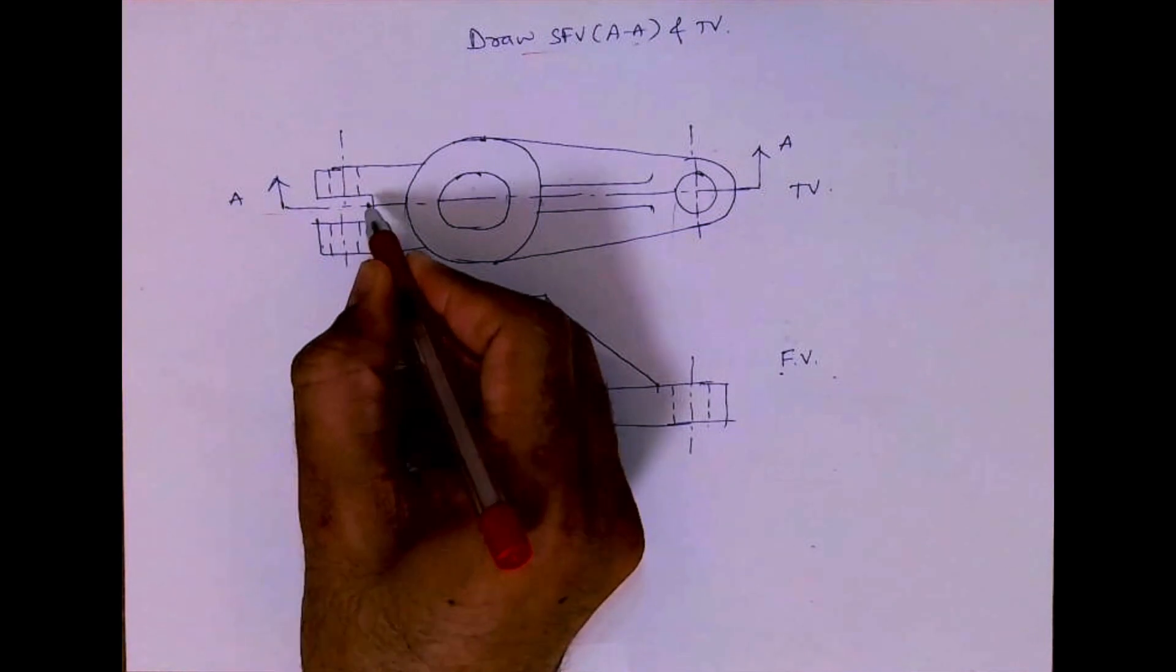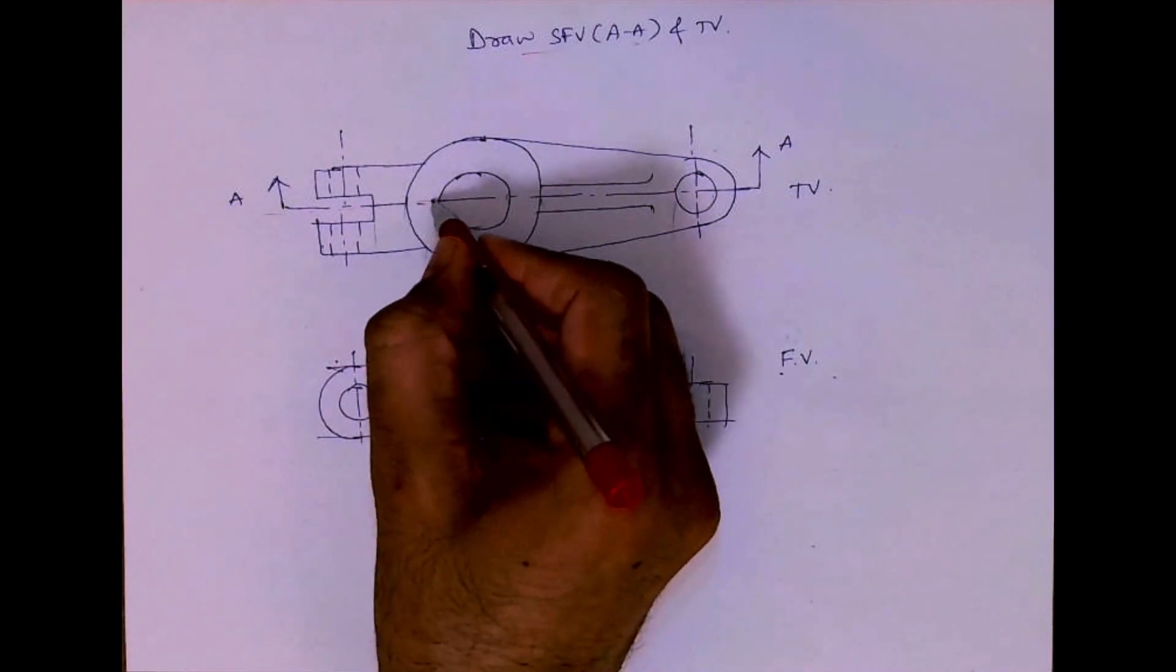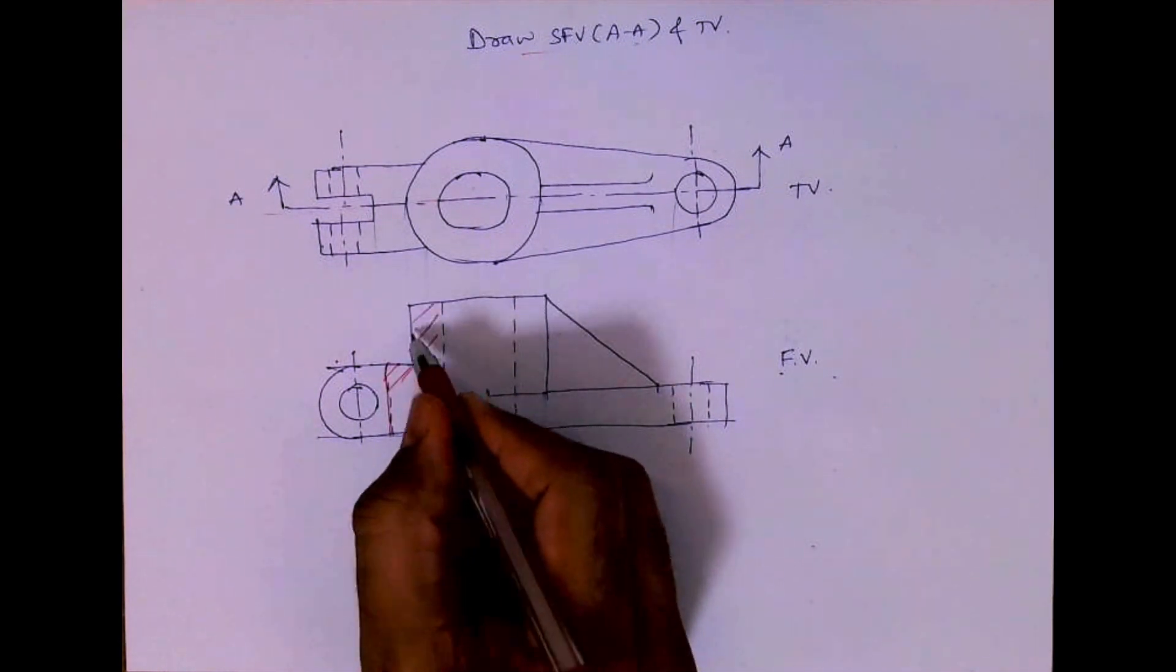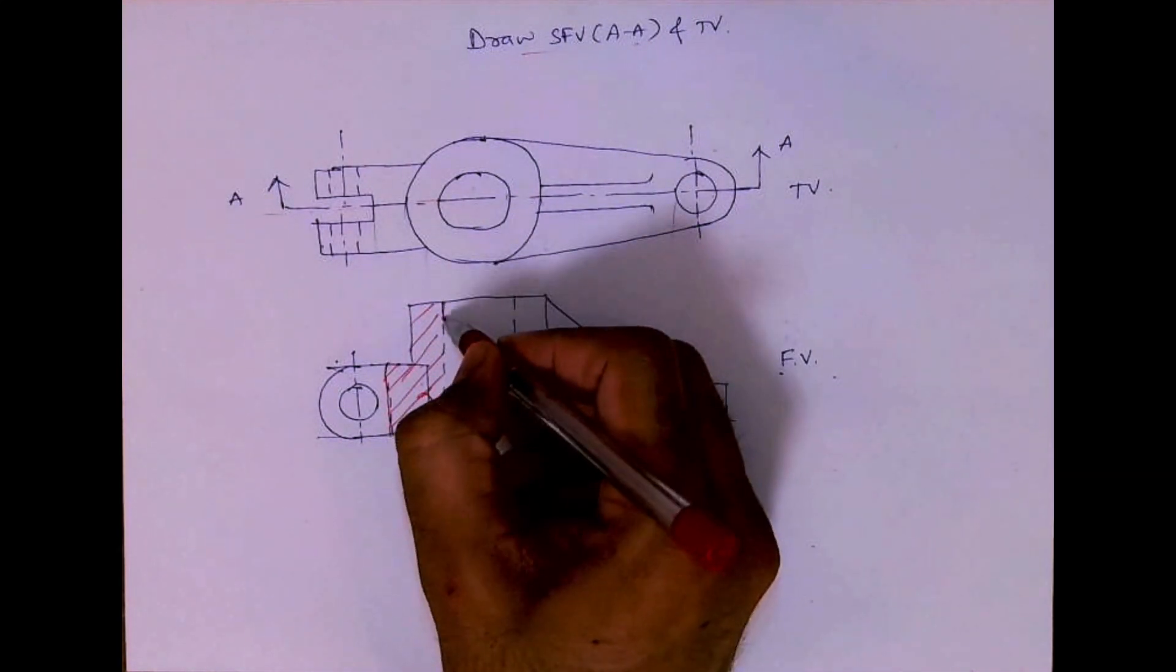If you see this here, I'm not cutting anything. This is getting cut, so this will be hatched. This line will go away and the dotted line will become solid.